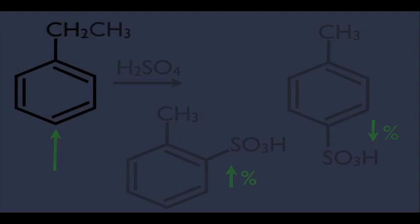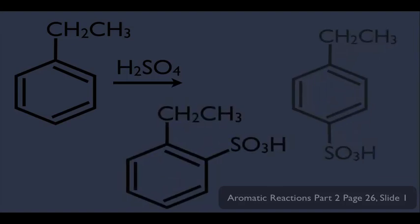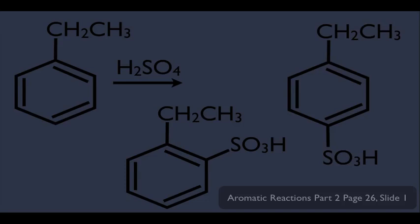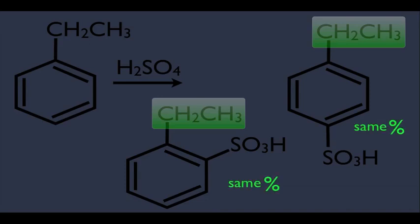However, look what happens when we make the substituent on the benzene ring more bulky — watch how this changes things. Again, if I add H₂SO₄, it's still an ortho-para directing activator, which means we'll still get an ortho and a para product. But because this group is a little more bulky, what happens is now we're getting roughly a 50/50 mixture, meaning we'd get equal amounts of both in this particular case.